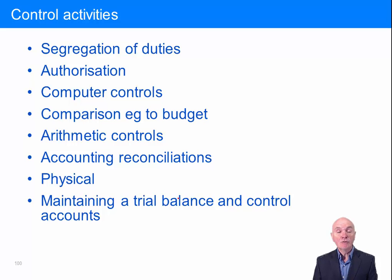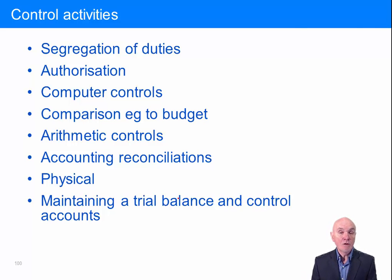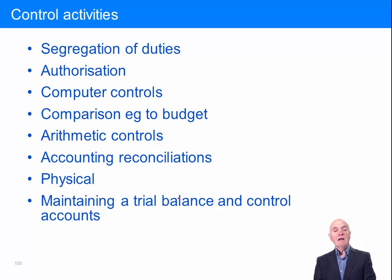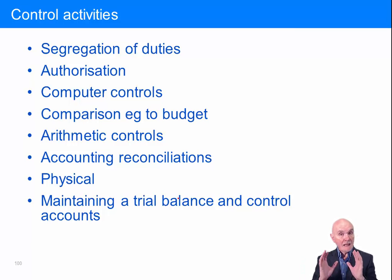Inventory should be safeguarded — it's often very valuable and is kept in stores, only issued on properly authorised requisition notes given to the storeman. Cash should be safeguarded: in a retail business with a lot of cash, part of internal control is to make sure that most of the cash is banked daily, because if it just hangs around in tills and drawers it can be sure to go missing. And then maintaining a trial balance and control accounts: does the total of the payables ledger reconcile with the payables control account? If it doesn't, something's gone wrong in your detail.